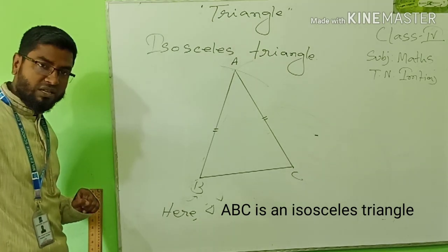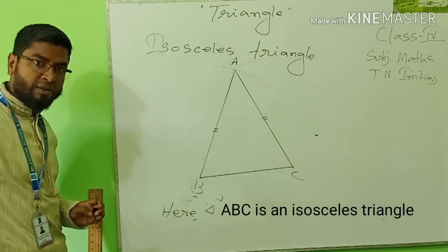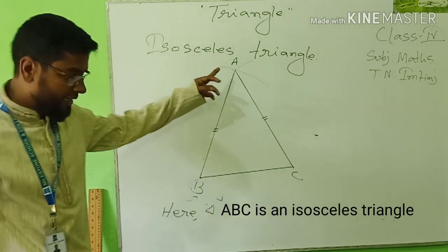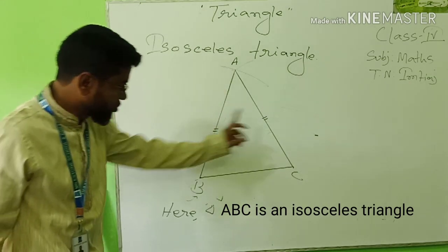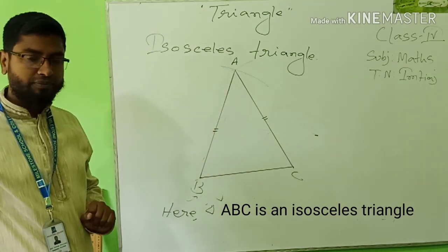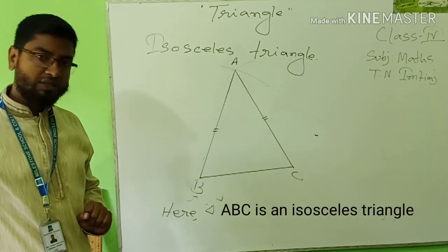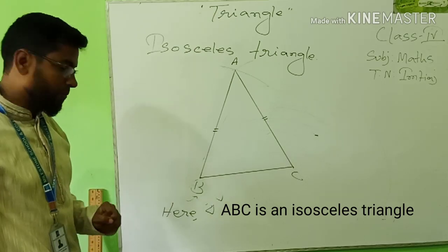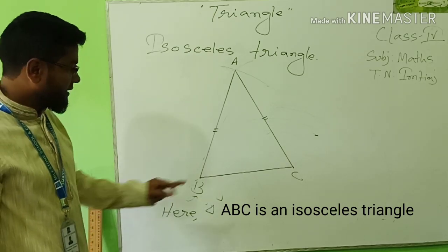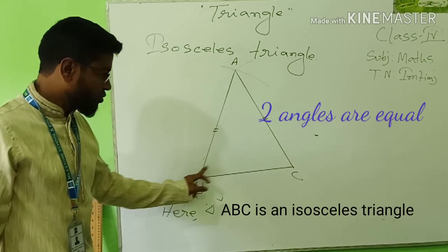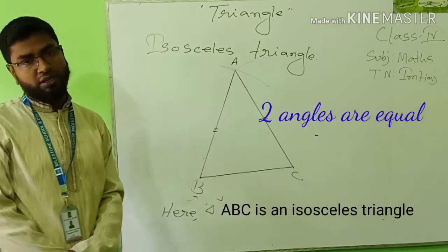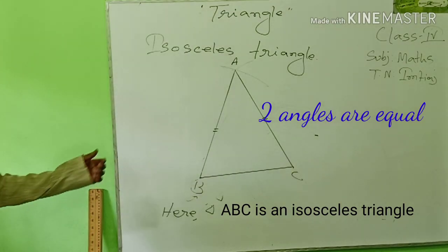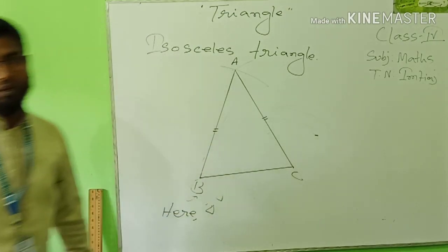Have you understood the isosceles triangle? A triangle whose two sides are equal is called an isosceles triangle. It has another property: two angles are also equal.